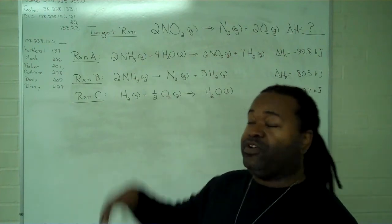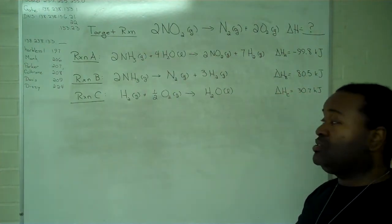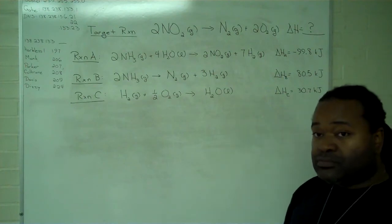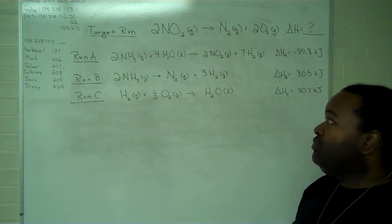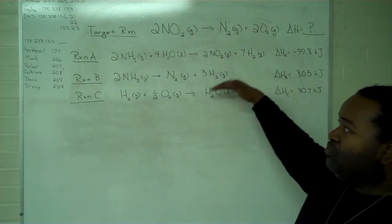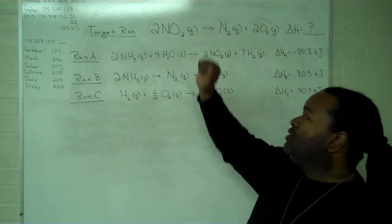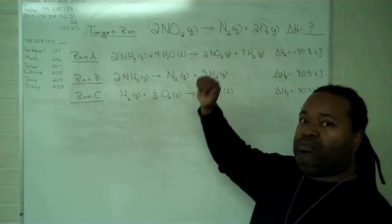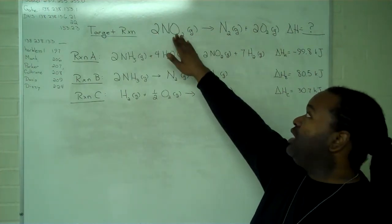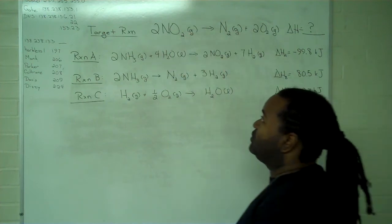In order to do this, we have to first verify that the target reaction is in fact properly balanced, which in this case it is. At that point, we determine what manipulations are necessary to each of the working reactions to get the appropriate number of moles for each portion of our reaction and make sure that they are on the correct side of the yield as either reactants or products.